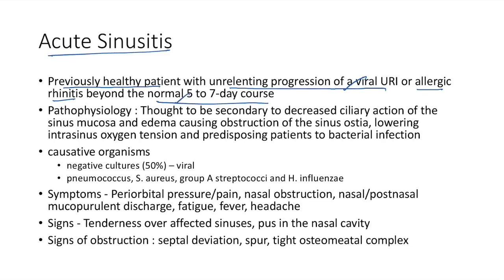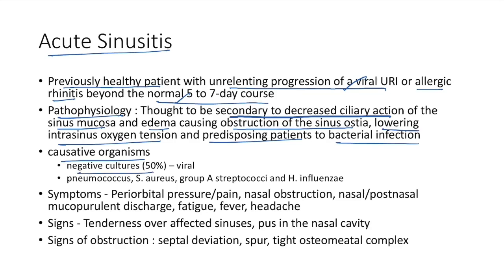Pathophysiology of acute sinusitis: decreased ciliary action of the sinus mucosa and edema causing obstruction of the sinus ostia, lowering intra-sinus oxygen tension and predisposing to bacterial infection. Cultures are negative in 50% of cases, suggesting viral etiology. Bacterial causes include Pneumococcus, Staphylococcus aureus, group A Streptococci, and Haemophilus influenzae.